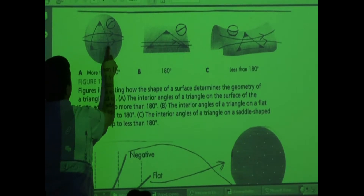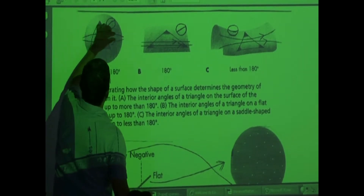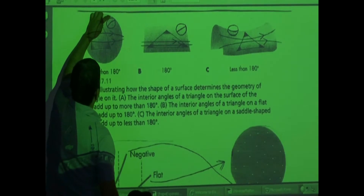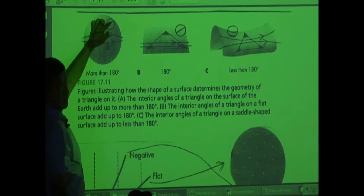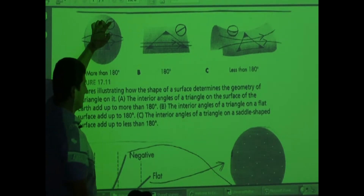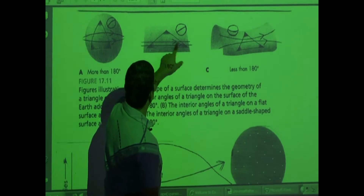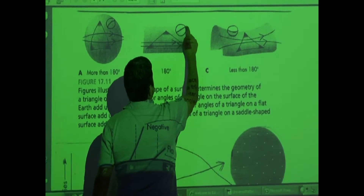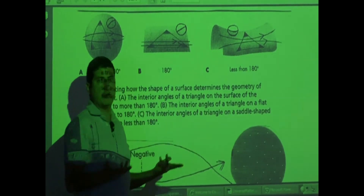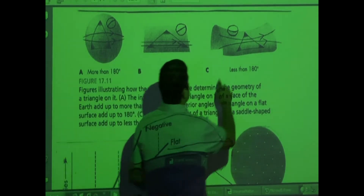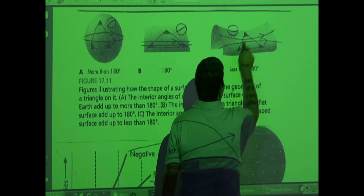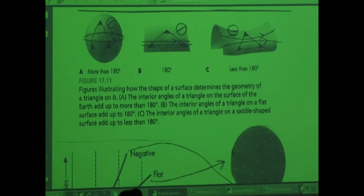The angles of a triangle add up to 180, the parallel lines converge, and if you draw a circle and divide the circumference by the diameter, you get a number less than 3.14. For flat space, the angles of a triangle add up to 180, parallel lines stay parallel, and circumference divided by diameter gives you pi — the regular pi that we know, 3.14. For negatively curved space, parallel lines diverge, and the circumference divided by the diameter gives a number greater than 3.14.